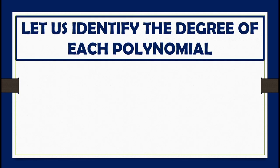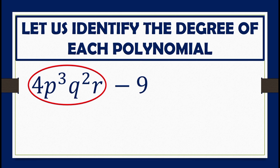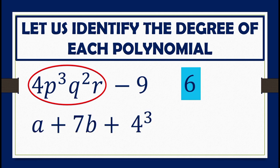Let us identify the degree of each polynomial. First, 4p cubed q squared r minus 9. To determine the degree, add the exponents of the variables: 3 plus 2 plus 1 equals 6, so the degree is 6. Next, a plus 7b plus 4 cubed. The variables present are a and b, and the highest exponent is only 1. Therefore, the degree of this polynomial is 1.